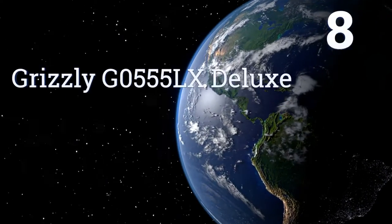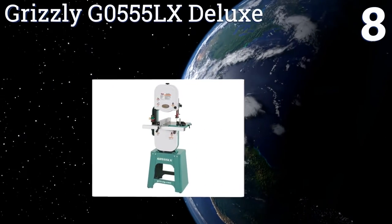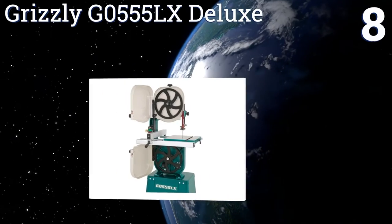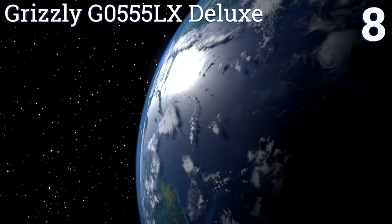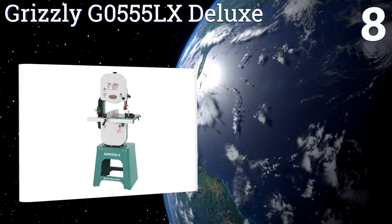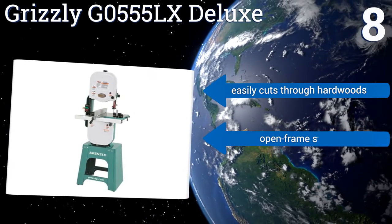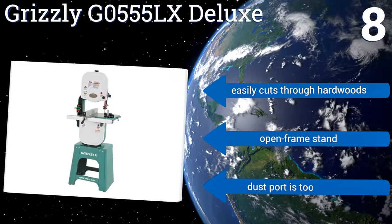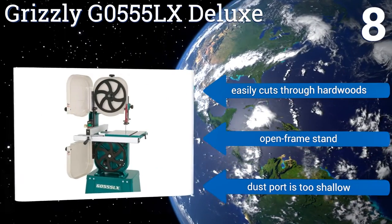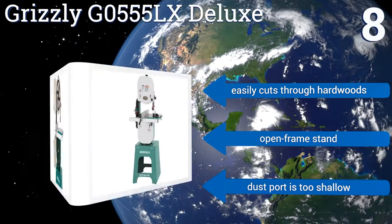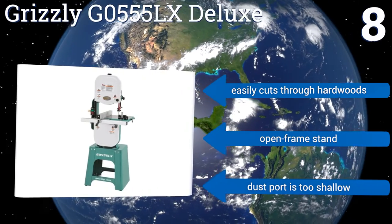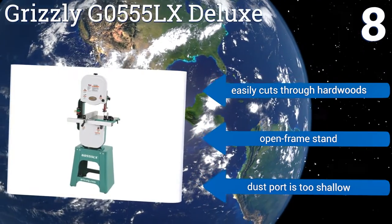Coming in at number 8 on our list, the Grizzly G0555LX Deluxe delivers uncompromising performance in a compact but solid frame, thanks to its ball-bearing blade guides and computer-balanced cast-iron wheels. It also comes with an adjustable T-shaped aluminum re-saw fence. It easily cuts through hardwoods and has an open-frame stand. However, the dust port is too shallow.